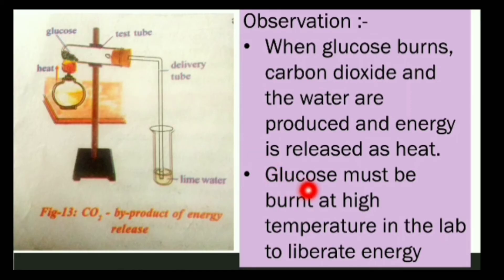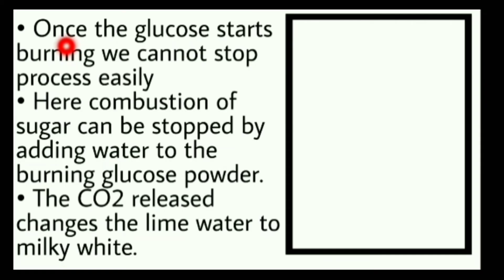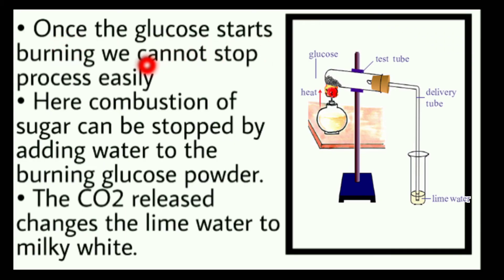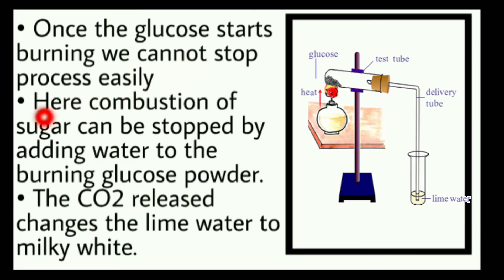Glucose must be burnt at high temperature in the lab to liberate energy. Once the glucose starts burning, we cannot stop the process easily. Combustion of sugar can be stopped by adding water to the burning glucose powder.